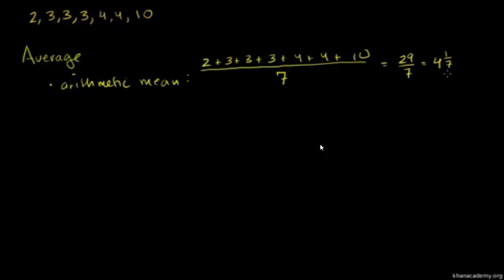But this is a representation of the central tendency, or the middle of these numbers. And it kind of makes sense. 4 and 1 seventh, it's a little bit higher than 4. We're kind of close to the middle of our number range right there. And you might say, well, it's a little skewed to the right. And what caused that? Well, this 10 is a little bit larger than all of the other numbers. It's kind of an outlier. Maybe that skewed this average up, the arithmetic mean.